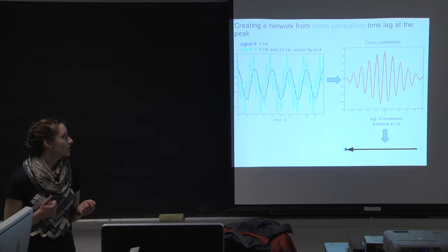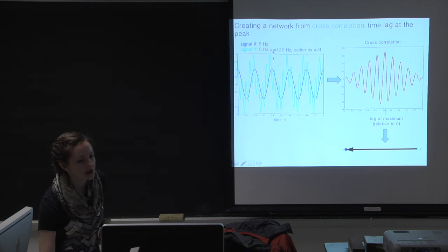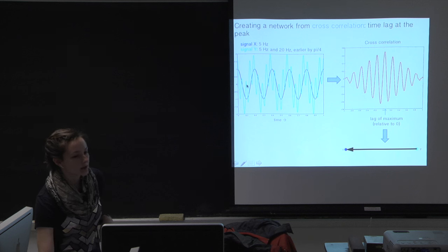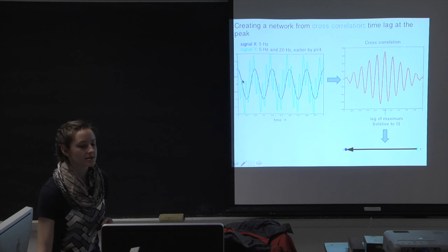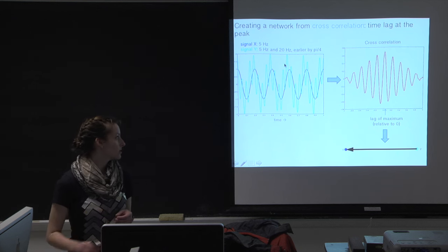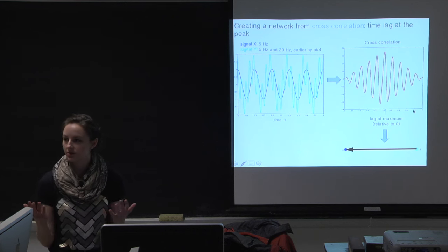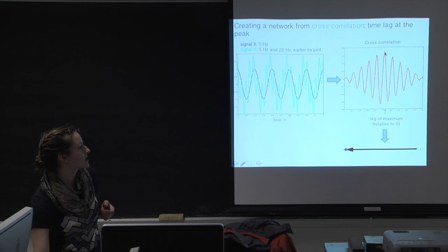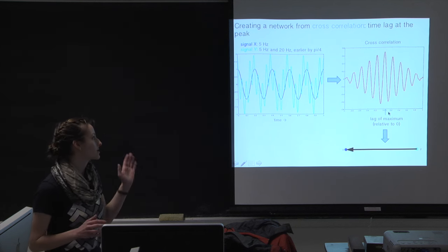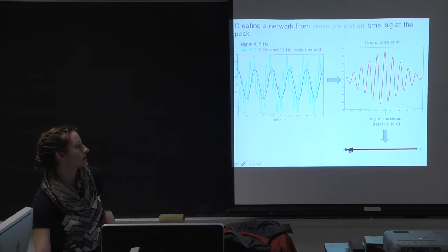To briefly review the two techniques I used: cross-correlation. I'm showing a simple example with two signals — signal X in blue and Y in cyan. They both have sinusoidal components, and I shifted Y earlier by pi over four. Performing cross-correlation on the two signals gives a sinusoidal result where the x-axis is the time lag. The peak of the cross-correlation occurs at a positive time lag, meaning you need to shift Y forward in time so it maximally correlates with X — from which we infer that signal Y is leading signal X.